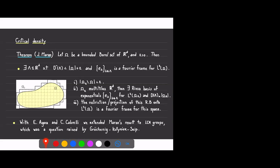With Elona Agora and Carlos Cabrelli, we tried to mimic this idea in locally compact abelian groups. Using the ideas of Ortega-Cerdà, we could prove that also in that setting you can find Fourier frames close to the critical density. Although you don't have cubes or dilations in general locally compact abelian groups, causing some technical problems, you can follow this scheme and obtain a similar result.